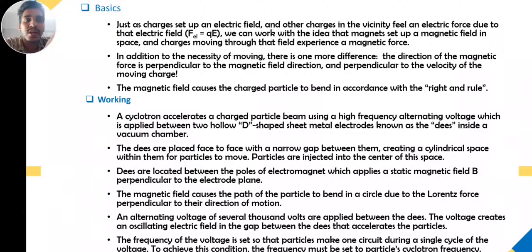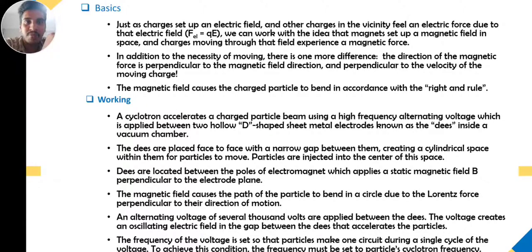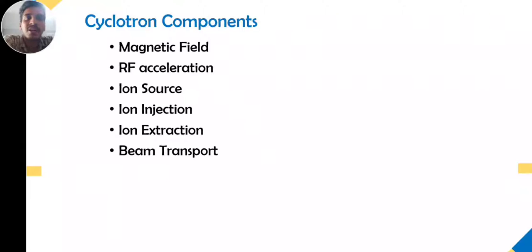The D's are placed face to face with a narrow gap between them, creating a cylindrical space for particles to move. Particles are injected into the center space, located between the poles of an electromagnet which applies a static magnetic field B perpendicular to the electrode plane. The magnetic field causes the particle path to bend in a circle due to the Lorentz force perpendicular to their direction of motion. An alternating voltage of several thousand volts applied between the D's creates an oscillating electric field that accelerates the particle. The frequency is set to the cyclotron frequency.